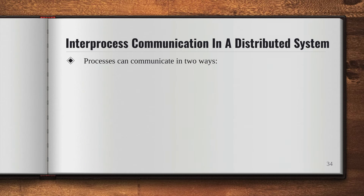Processes can communicate in two ways. First is the shared memory method, and second is the message passing method.